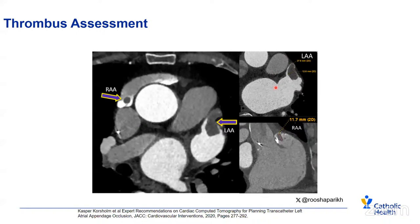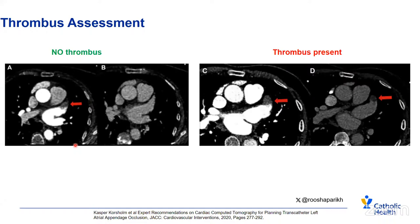On the left panel, A and B demonstrate a filling defect visible in the early acquisition but not in the late acquisition, indicating slow flow. The right panel demonstrates contrast filling defects present in both early and delayed image acquisition, most likely representing thrombus.